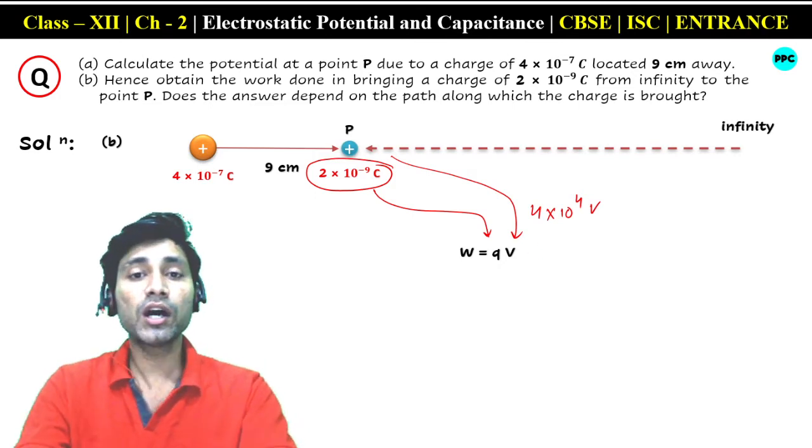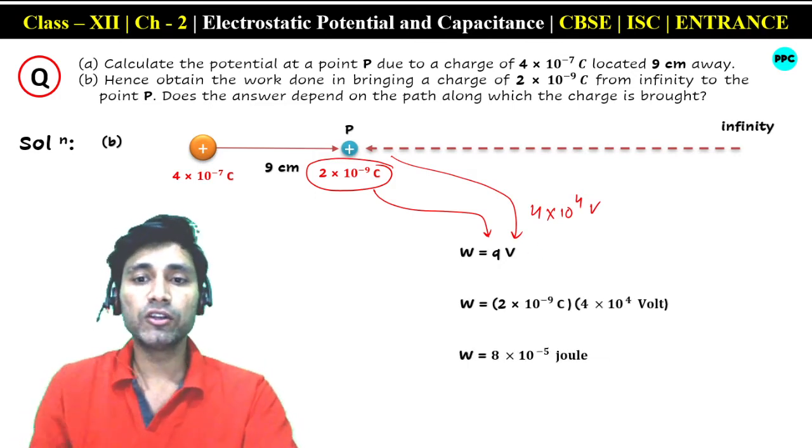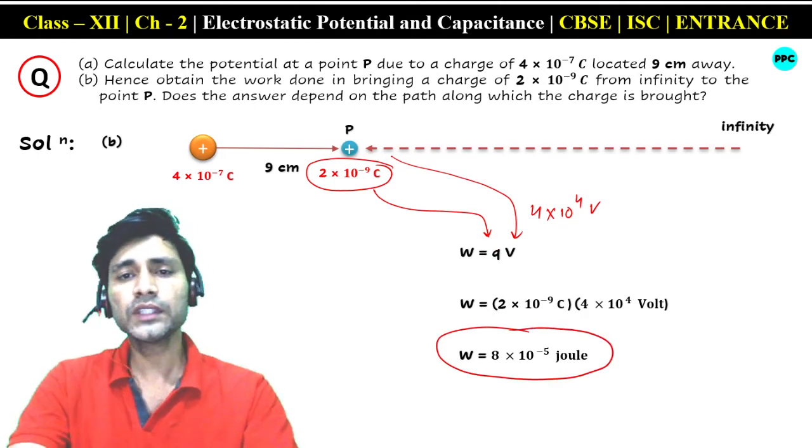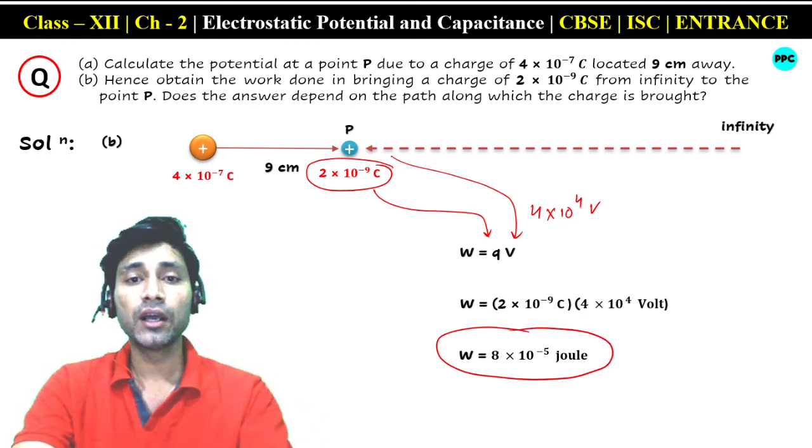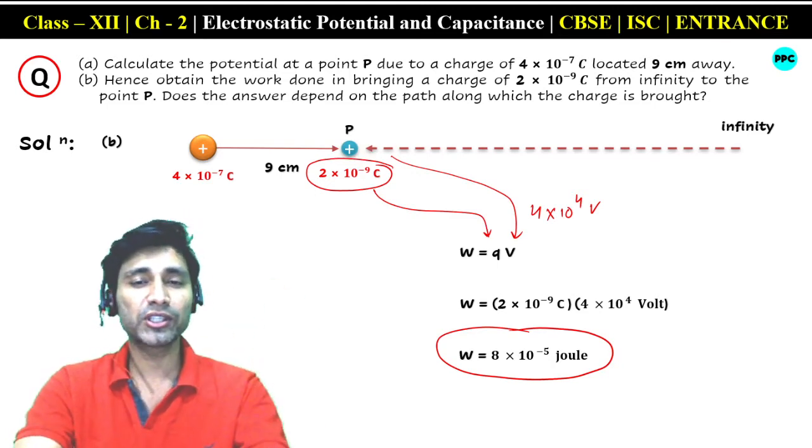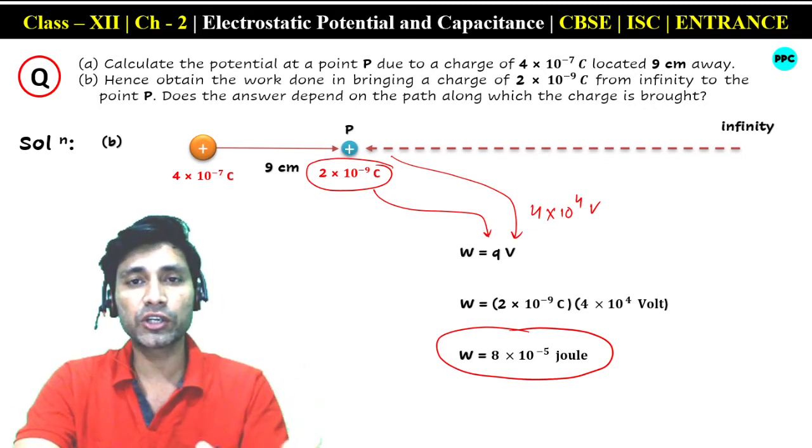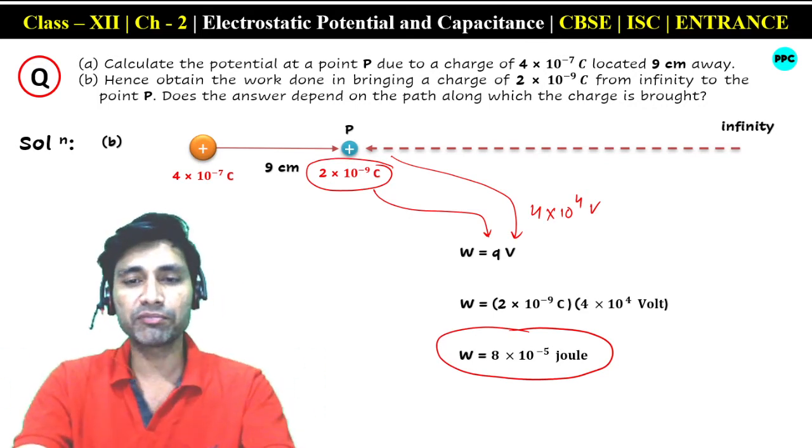We multiply both and get the value 8 × 10⁻⁵ joule. If potential is in volts and charge is in coulombs, then work will be in joules. This is how we find work done in bringing a charge from infinity to that point. We need to know the potential at that point and how much charge we are bringing from infinity. Multiply both to get the work.